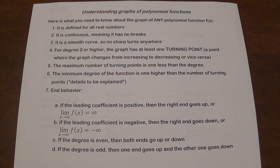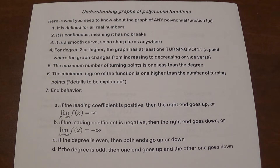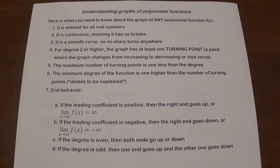The maximum number of turning points is going to be always one less than the degree — that's the maximum possible number. And the minimum degree is always going to be one higher than the number of turning points, but there are more details that are going to be explained.